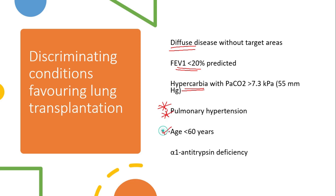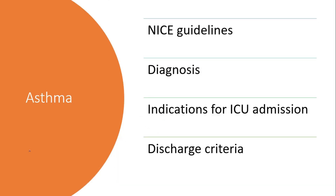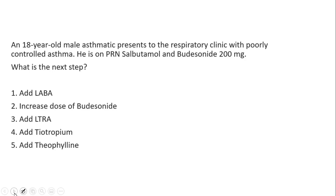Coming to asthma, please do not enter the examination hall without reading the NICE guidelines for diagnosis and treatment of asthma. They also ask about the indications for ICU admission and what the discharge criteria are. This is also a very favorite topic for NHS training and non-training interviews. This is a simple question — you will be able to answer it if you read the NICE guidelines thoroughly. The correct answer in this situation is to add a LABA.